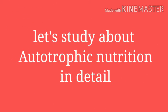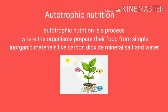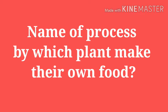Let's study autotrophic nutrition in detail. Autotrophic nutrition is a process where the organism prepares its food from simple inorganic materials like water, mineral salts, and carbon dioxide in the presence of sunlight. Examples include green plants, algae, and some bacteria. Do you know the name of the process by which plants make their own food?